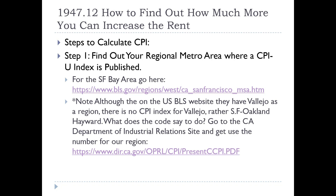The first step in calculating CPI is to find your regional metro area where the CPI-U index is published — for example, the San Francisco Bay Area. You can go to the Bureau of Labor Statistics at the link provided in the notes. If your area is not published by the Bureau of Labor Statistics, you have to go to the Department of Industrial Relations, as the code says. The regions published by the U.S. Bureau of Labor Statistics for California are what you have to use.